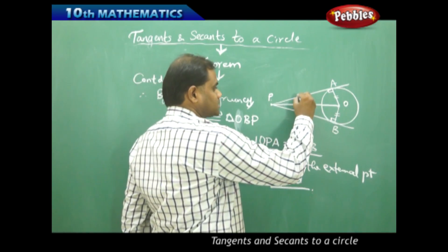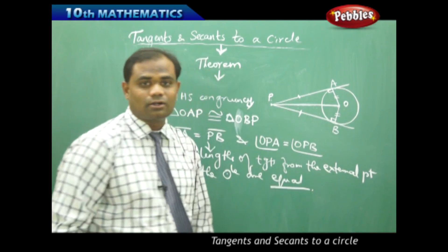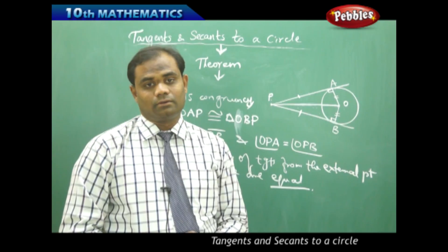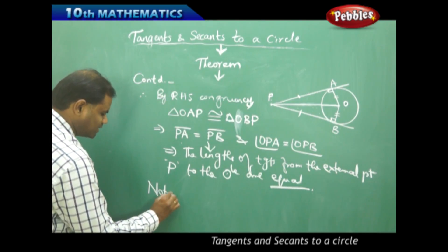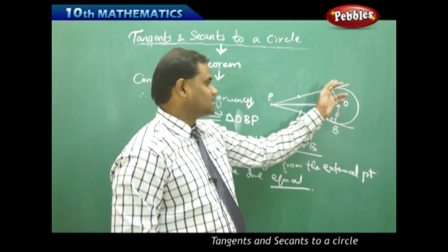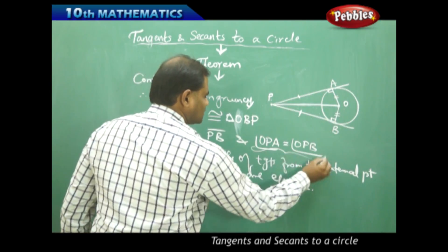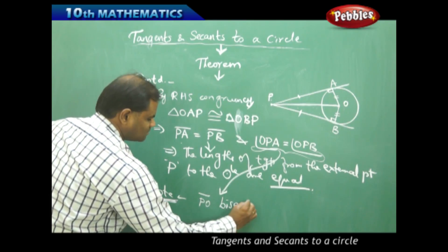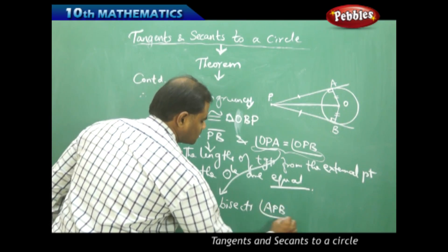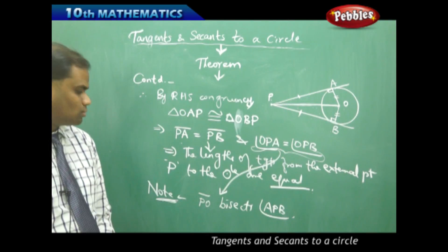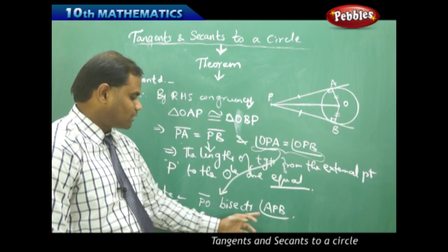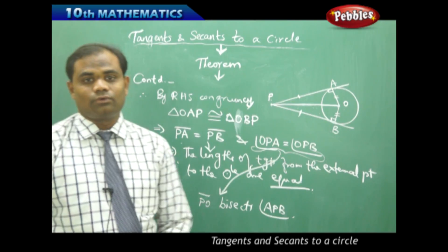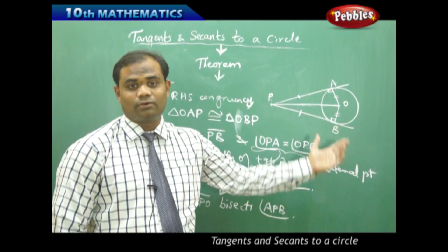So whenever we draw tangents from an external point, the two lengths are always equal for any point outside the circle. Also, there is an additional property: PO bisects angle APB. Therefore OP is the angular bisector of angle APB, which is also identified from the congruency through geometrical properties.